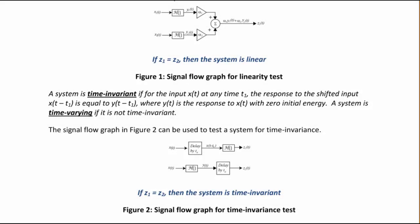A system is time-invariant if for the input x(t) at any time t1, the response to the shifted input x(t minus t1) is equal to y(t minus t1), where y(t) is the response to x(t) with zero initial energy. A system is time-varying if it is not time-invariant.